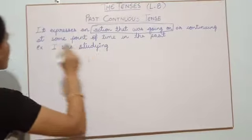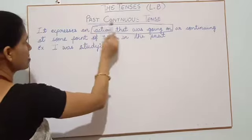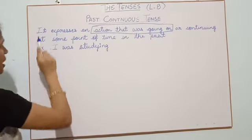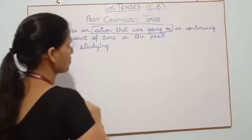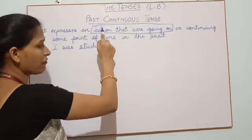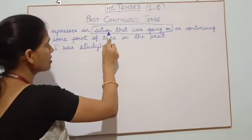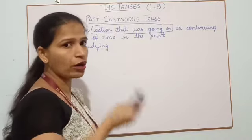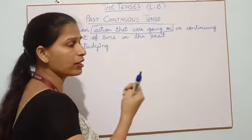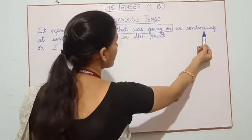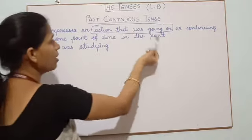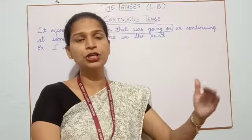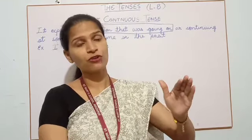I have a definition on the board. Let's read. This is lesson number 8 — the tenses. Past continuous tense. It expresses an action that was going on — that is, continuing at some point of time in the past. The action began in the past, was continuing for some time in the past, and it ended there as well.